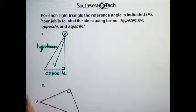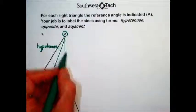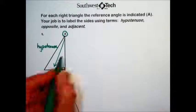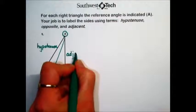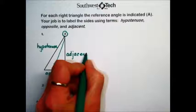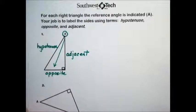That leaves us with the third side, the other leg. We will label this side the adjacent side. It's the remaining unlabeled side.